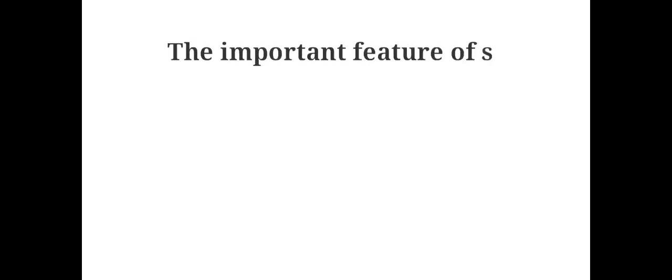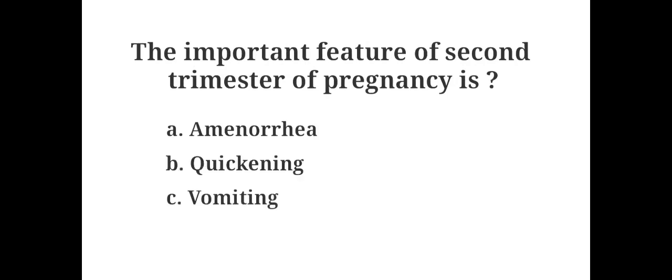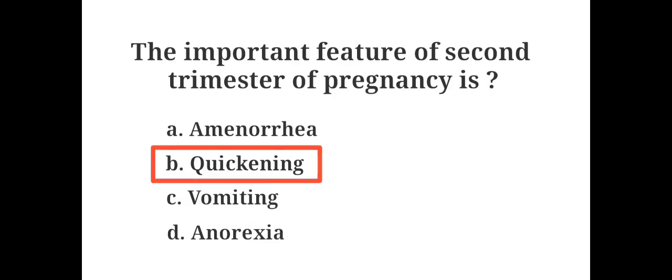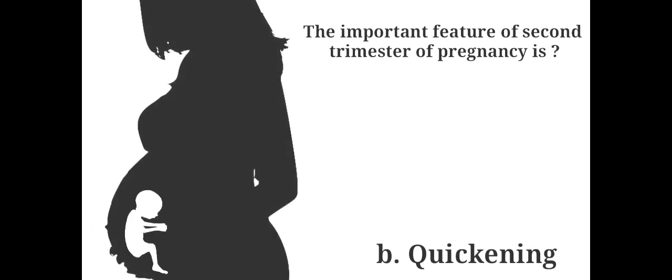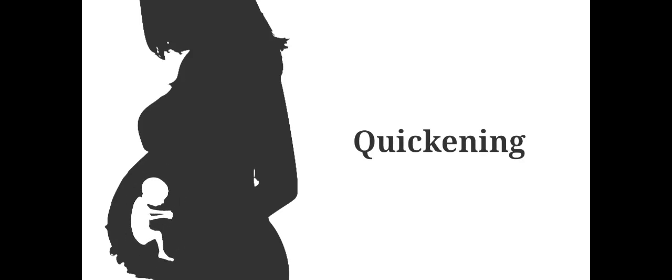The important feature of the second trimester of pregnancy is: A. Amenorrhea, B. Quickening, C. Vomiting, D. Anorexia. The answer is B. Quickening. Quickening is the moment in pregnancy when the pregnant woman starts to feel or perceive fetal movements in the uterus.